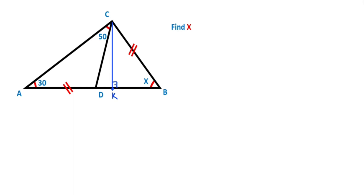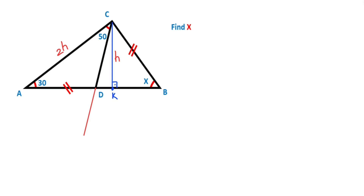Let's call this point K. If there is an h unit opposite the 30 degrees, the side opposite the 90 degrees must also be equal to h. Then if we extend corner D like this, we know that two interior angles equal one exterior angle.